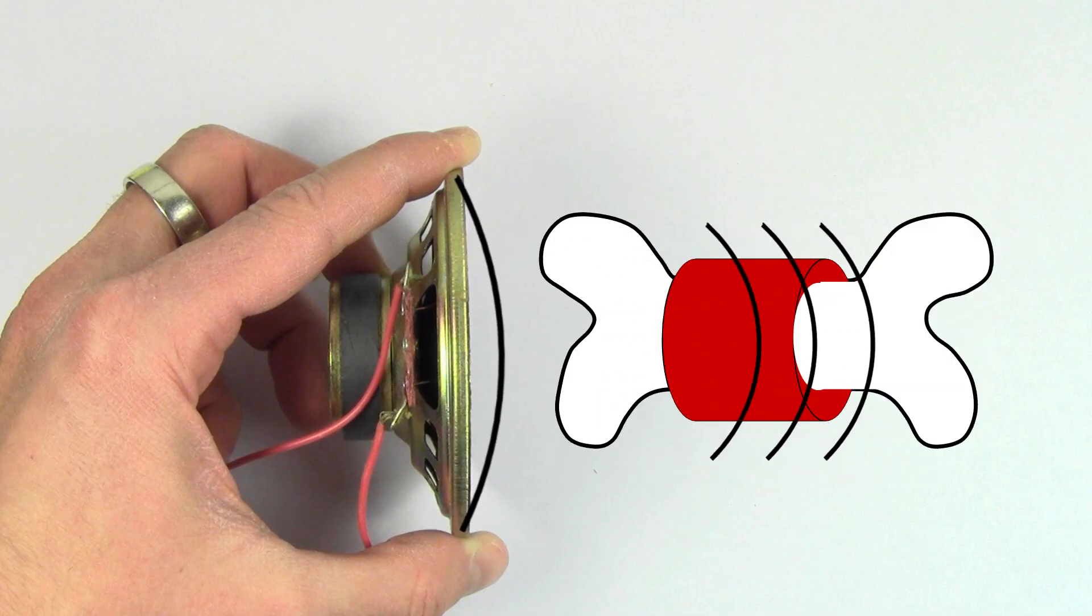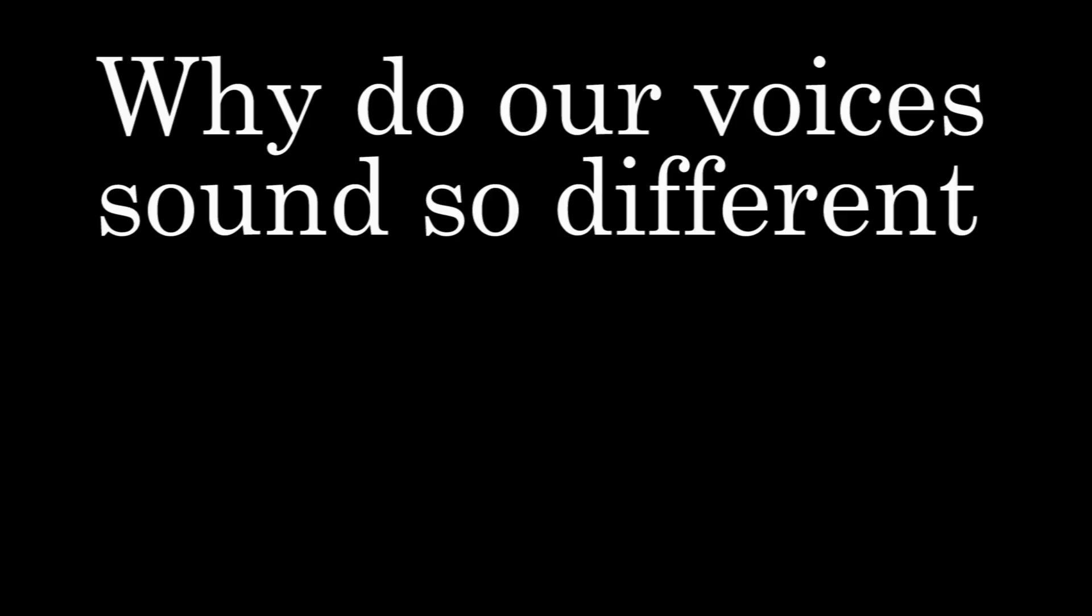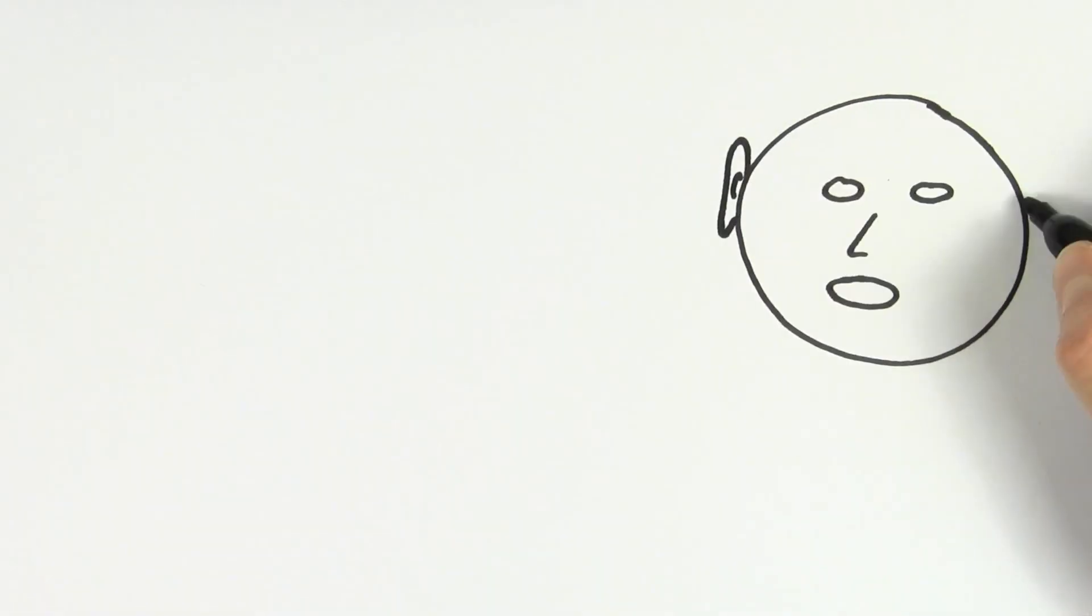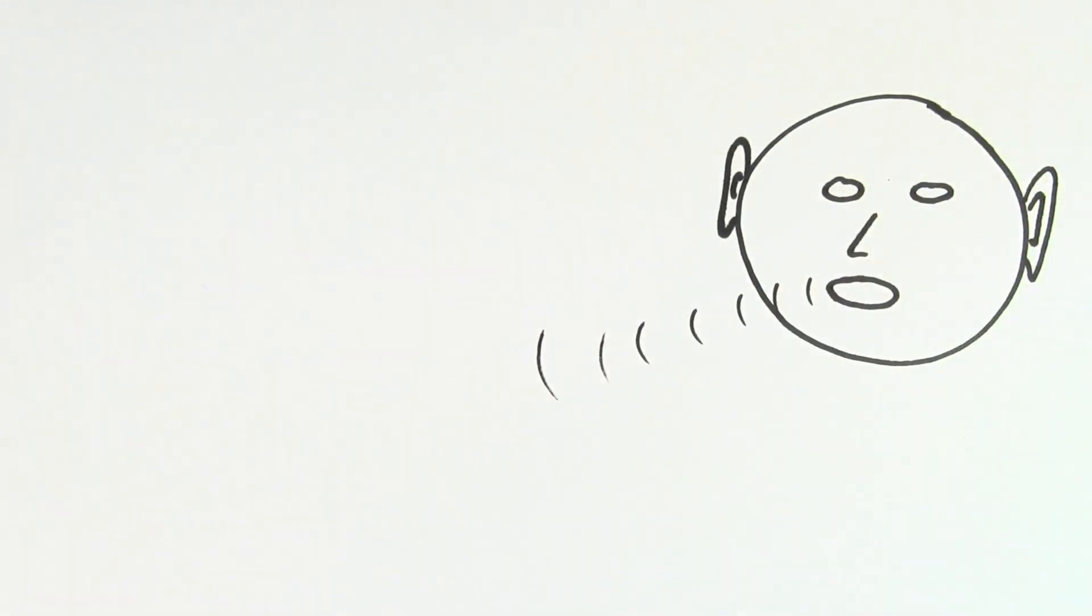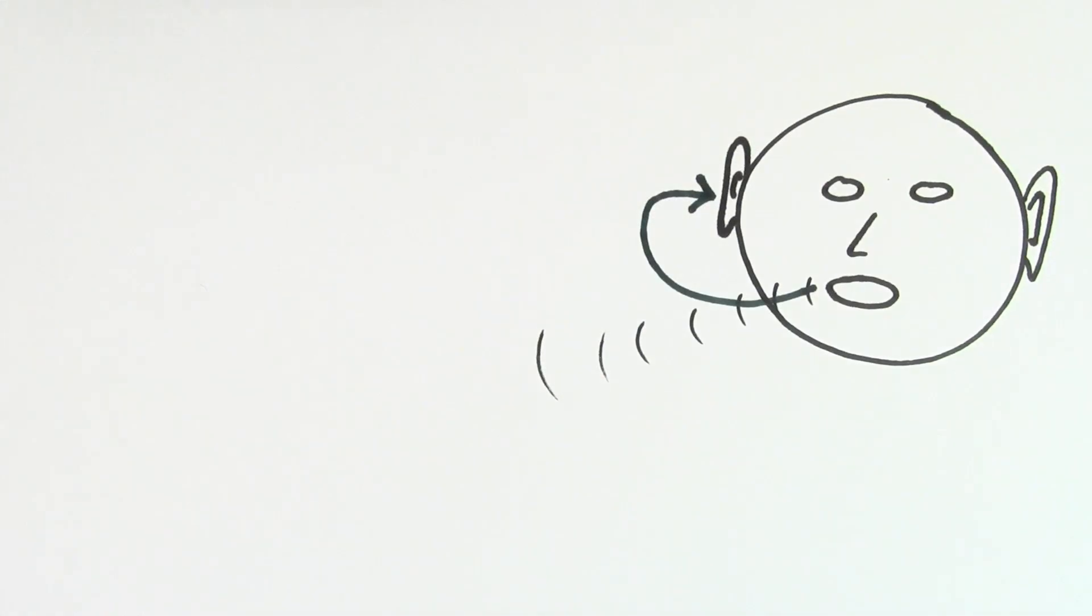And the fact that sound can travel through human flesh and bone explains something you might have always wondered about, which is why do our voices sound so different on audio and video recordings? The reason for this is that when we're speaking to someone, we actually hear two contributions from our voice. We hear the sound wave traveling out of our mouth, through the air, and into our ear.